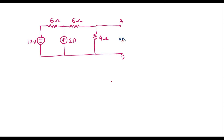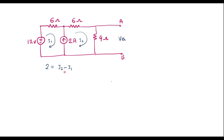VTH equals the voltage across the 4Ω resistor. Let me calculate the current in the circuit. There are two loops — assume current through the first loop is I1 and through the second loop is I2. We observe there is a current source between the two loops, so we analyze it first. We can write: 2A = I2 − I1, since I2 and 2A are in the same direction and I1 is opposite. Call this Equation 1.